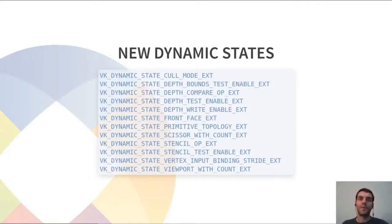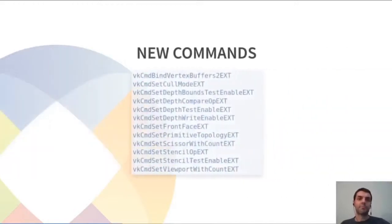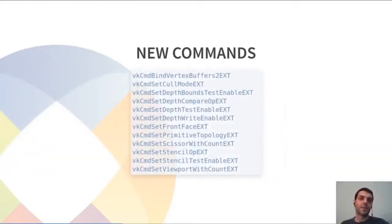This may make the application logic simpler, and it can also help when Vulkan is used as the backend, for example, to implement higher-level APIs that are not so rigid regarding pipelines. I know this extension is useful for some emulators and other API-translating projects. Together with those, it also introduces a new set of functions to change those parameters on the fly when recording commands that will use the pipeline state object.